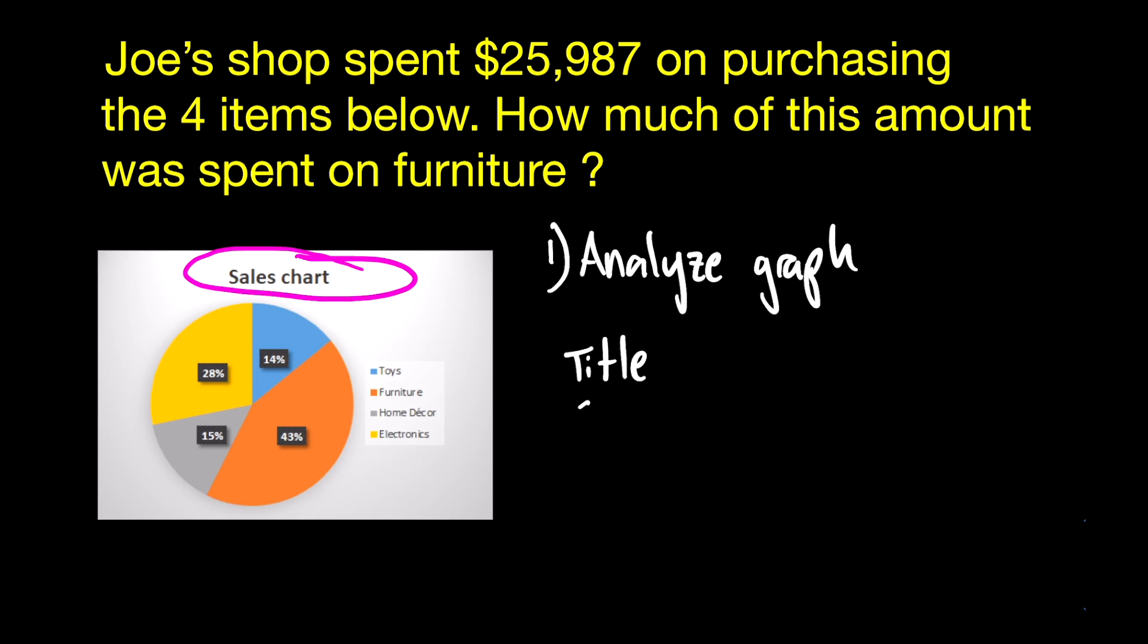The second thing you want to do is look at what each section of that pie represents. For example, the yellow slice of the pie gives you a specific percentage of what that represents. And then finally you want to look at the legend on the right.